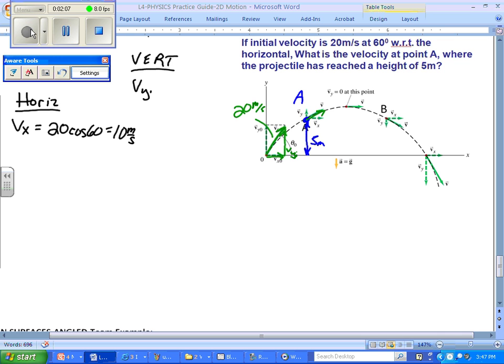The initial y velocity is going to be 20 times the sine of 60, so that, I believe, is 17.3 meters per second. Let me do the math out. And that's in the upwards direction. We also know, I'm going to put this line here so we can distinguish.